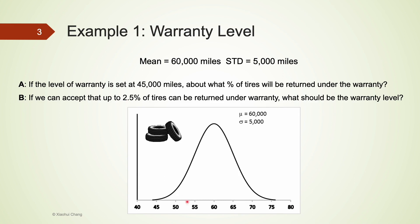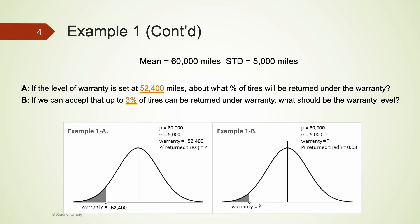For part B, if we can accept up to 2.5 percent of tires returned under warranty, what should the warranty level be? We need the area to the left to equal 2.5 percent. We know 0.15 percent is beyond negative 3, and between negative 3 and negative 2 is 2.35 percent. Adding those gives exactly 2.5 percent, so the warranty level should be set at a z-score of negative 2, which corresponds to 50,000 miles.